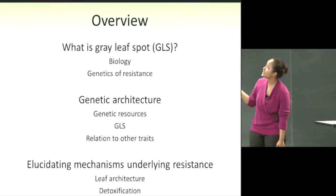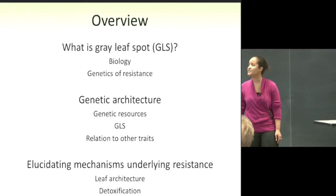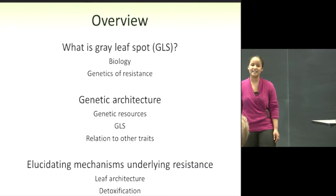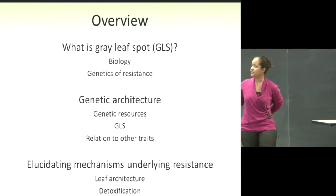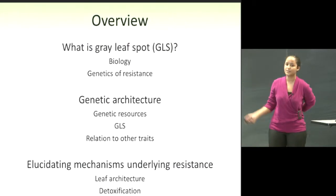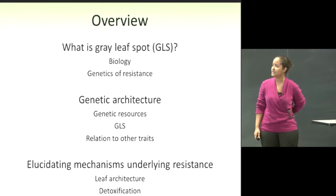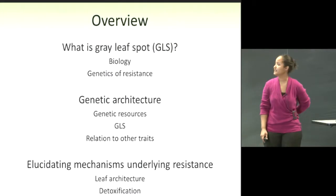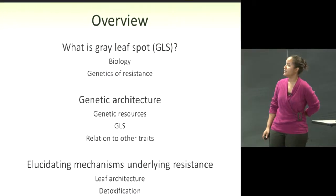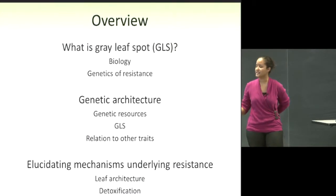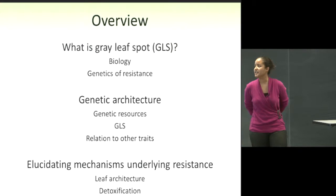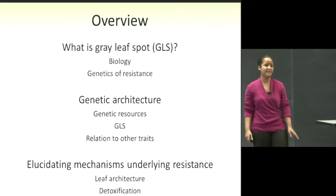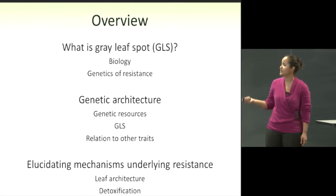I'll start off the talk by going over a little bit of the biology and what was previously known about the genetics of resistance. Follow that up with genetic architecture, those resources that our lab uses, gray leaf spot and its relation to other traits, and then elucidating mechanisms underlying resistance, specifically with regards to leaf architecture, detoxification and allelic variation in basal defense and the hypersensitive response.